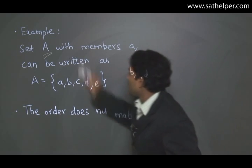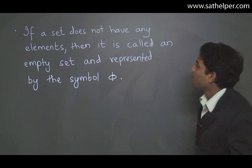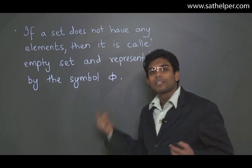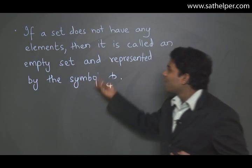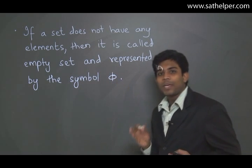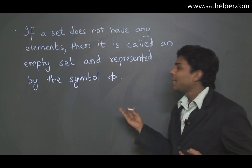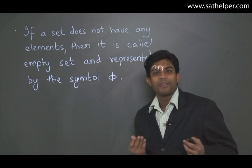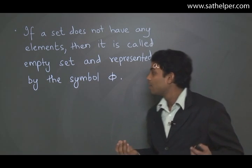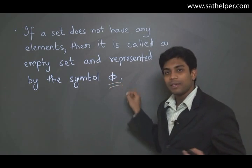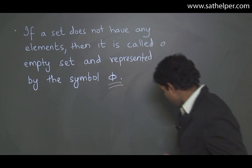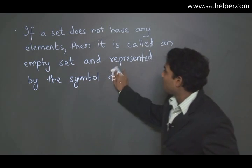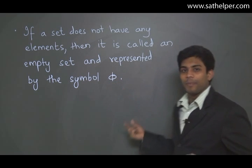Proceeding further, let's look at how sets can be represented and special types of sets. To be mathematically rigorous, people define a set called an empty set. An empty set, as you guessed, doesn't have any elements in it. It's represented by the symbol phi (φ).